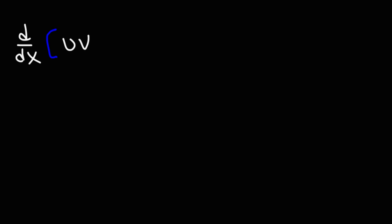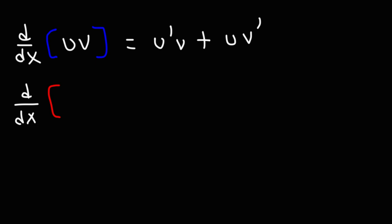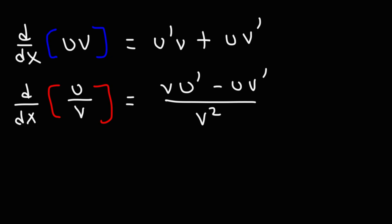The next formula you need to be familiar with is the product rule. So if we have two functions u and v, and they're multiplied to each other, the derivative of the product of these two functions is going to be u prime v plus u v prime. So it's the derivative of u times v plus u times the derivative of v. Next up, we have the quotient rule. Here we have a fraction of two functions, or a division of two functions, and it's going to be v u prime minus u v prime over v squared.